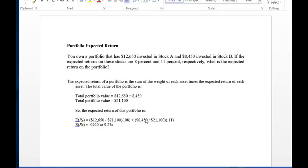And then we do it again with the 8,450, divide it by the 21,100 and multiply it by the 0.111. And when you add those two together, you get a number 0.0920 or 9.2%.